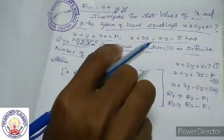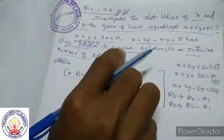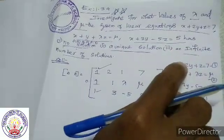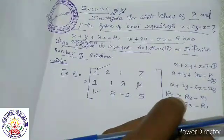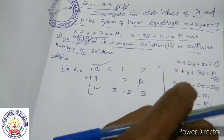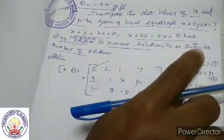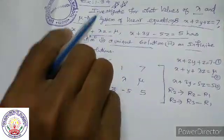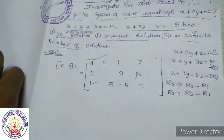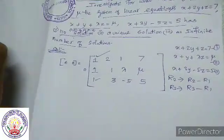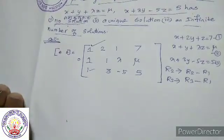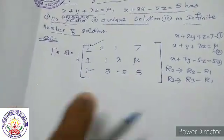Unique solution condition: rank A equals rank AB equals 3, and number of unknowns is 3. Infinite number of solutions: rank A equals rank AB equals 2, but number of unknowns is 3.